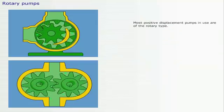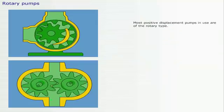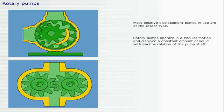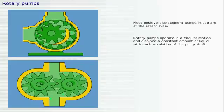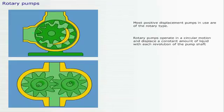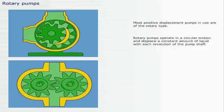Most positive displacement pumps in use are of the rotary type. Rotary pumps operate in a circular motion and displace a constant amount of liquid with each revolution of the pump shaft.